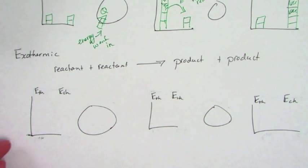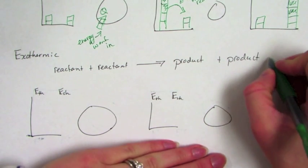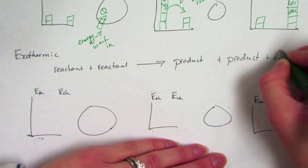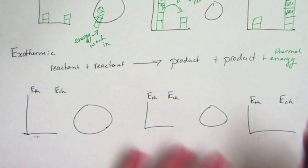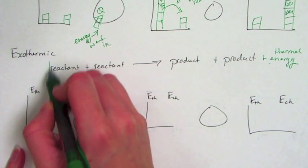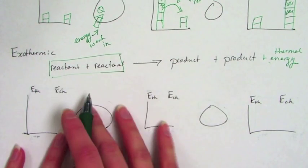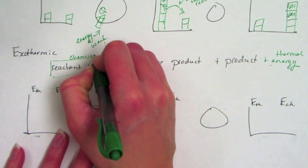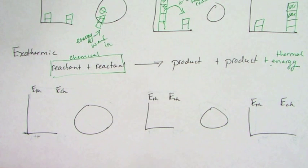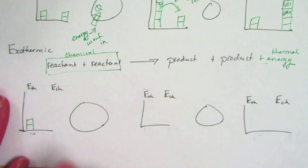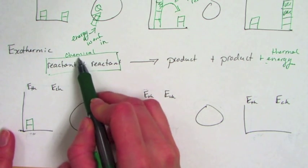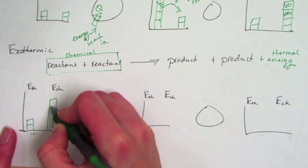In an exothermic reaction, energy is coming out — energy is a product, and again it's thermal. If you're holding a test tube and it gets warm, you're looking at an exothermic reaction where energy is coming out. By the law of conservation of energy, if we have thermal energy on the products side, that energy had to come from somewhere on the reactants side. Since there isn't much thermal energy on the reactants side, it must be in chemical energy form.